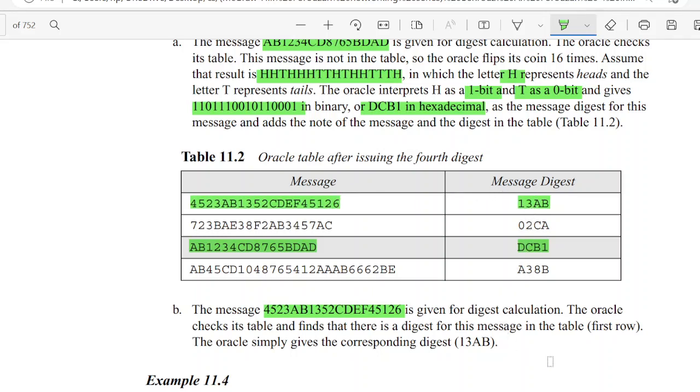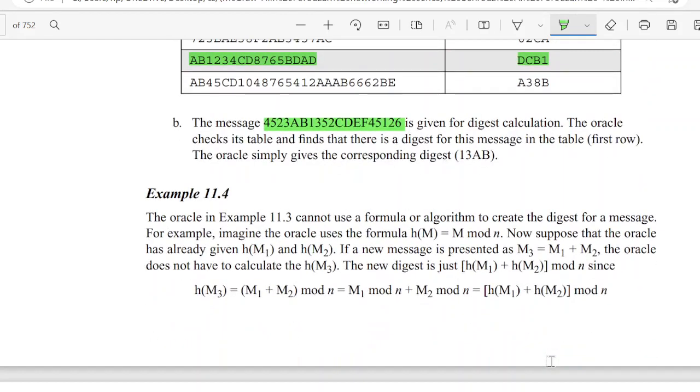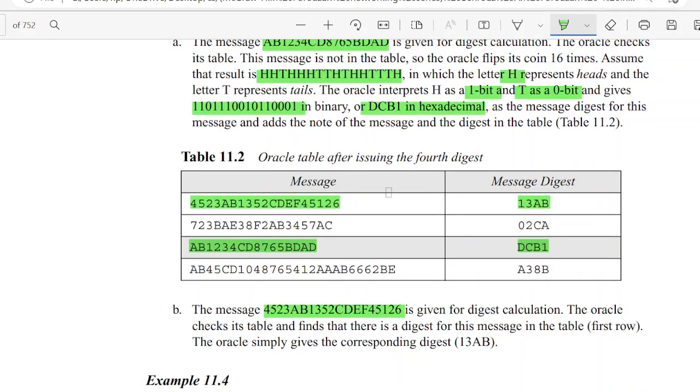It doesn't create a different digest for this. It first checks the record. If the message is present it gives the message and digest. Else if there's no message present, it creates a new digest and records that also.